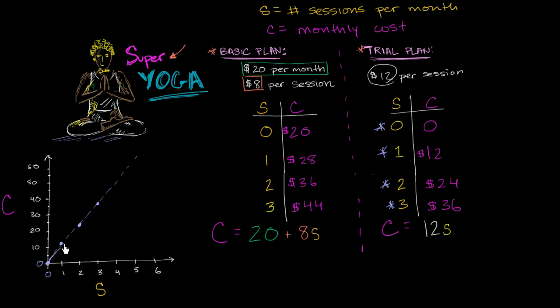This line essentially describes all of the possible combinations of cost for a given number of sessions. Especially if we're assuming that we allow fractional sessions. That's not conventional practice for most yoga studios, but this super yoga studio allows you to attend four and a half sessions, one and a half sessions, or exactly half a session. So if you attend half a session, it's going to cost you $6.